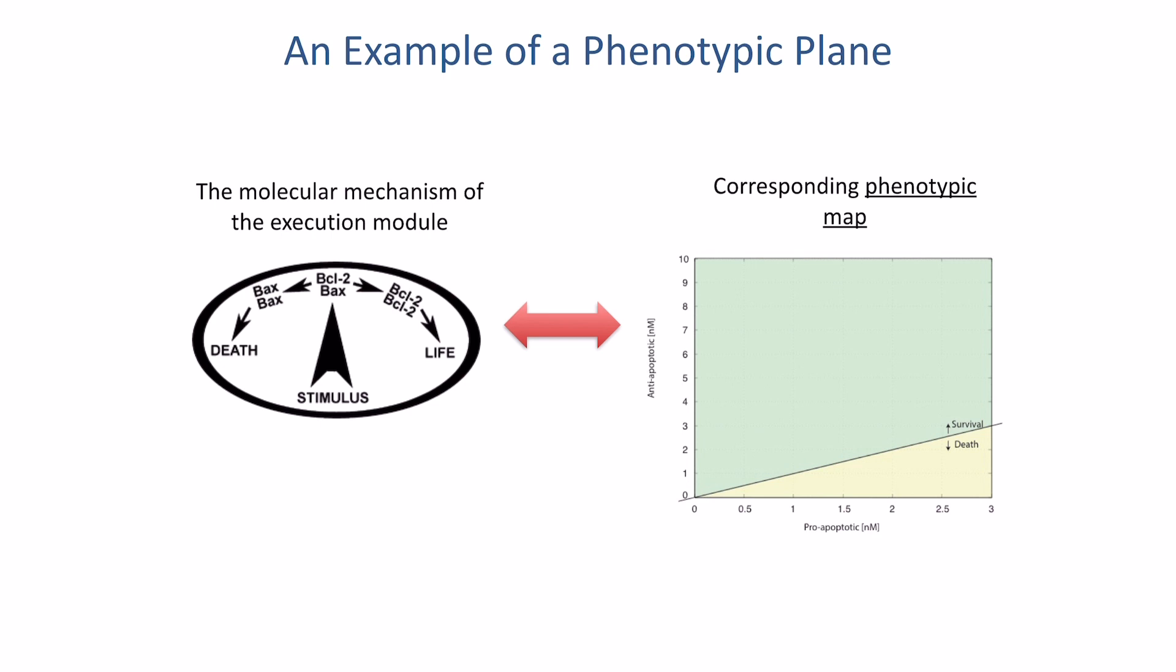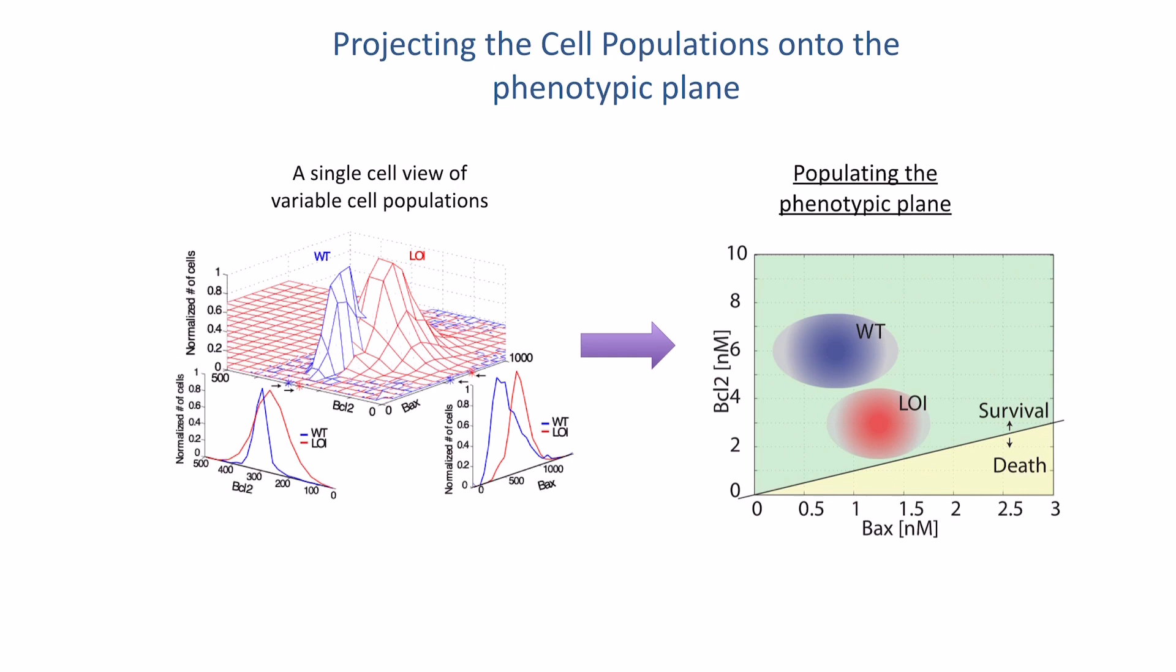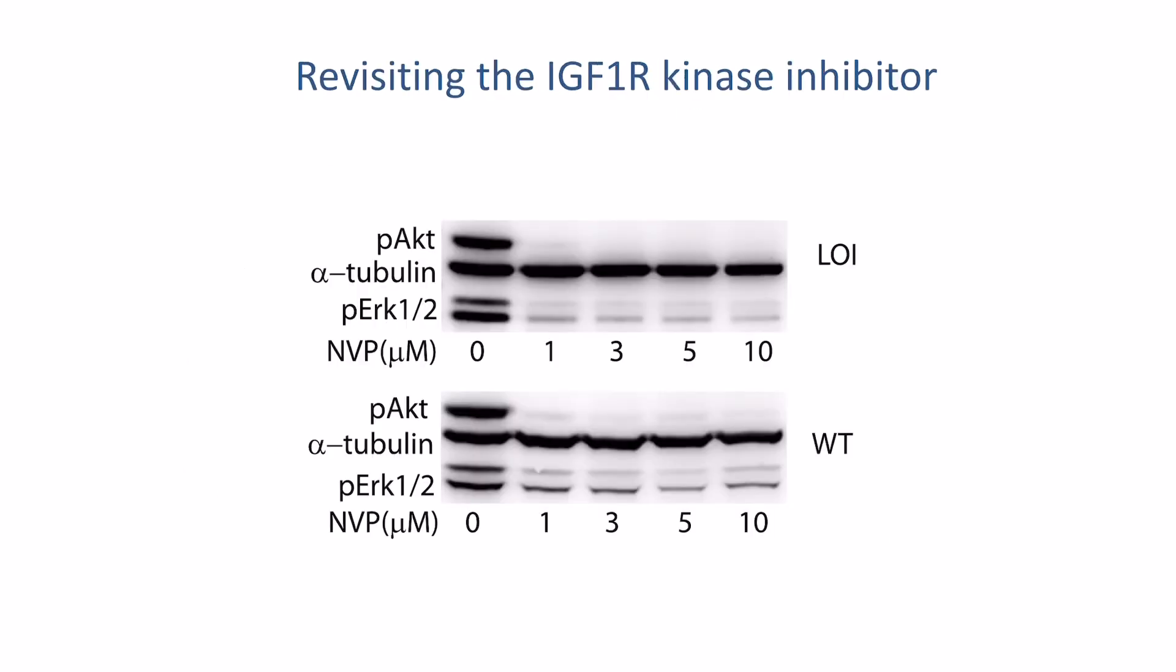So now we can go back to this map, this phenotypic map, and try to understand where the wild-type cells are and where the LOI cells are in this diagram. On the left you can see the actual measurements of BCL2 and Bax in both wild-type and LOI cells, and how this now gets mapped on the right onto this phenotypic plane. You find that this whole distribution of LOI cells is much closer to this boundary between the cell survival and cell death versus the wild-type cells. That immediately tells us that potentially it could be easier to kill the cells by a well-designed way where both of the populations potentially could be moved. But since LOI cells are already closer to the boundary, they can be potentially killed a little bit easier.